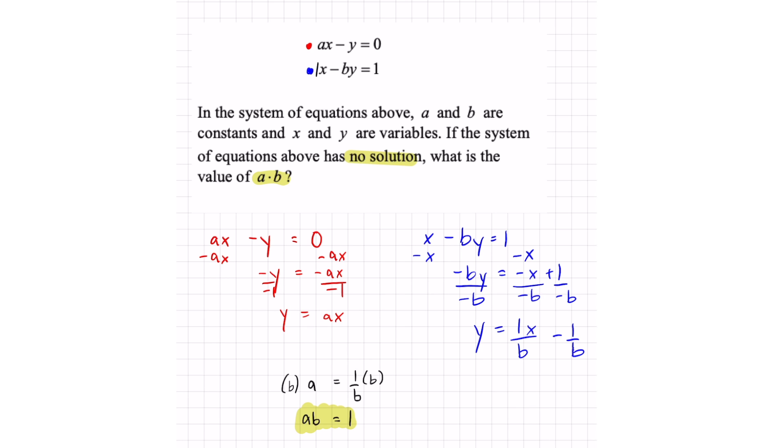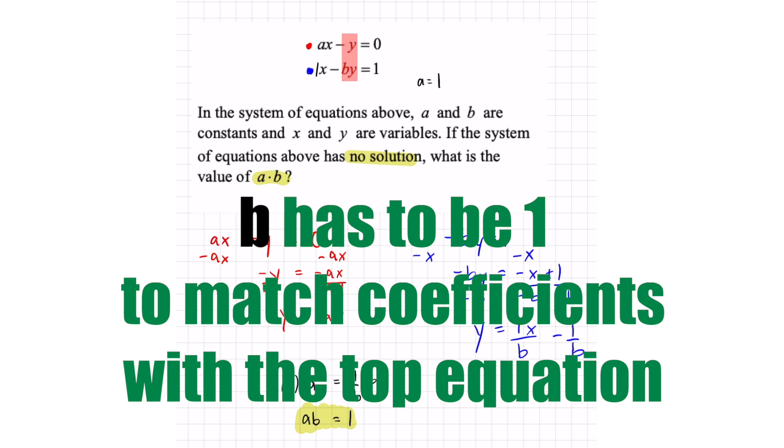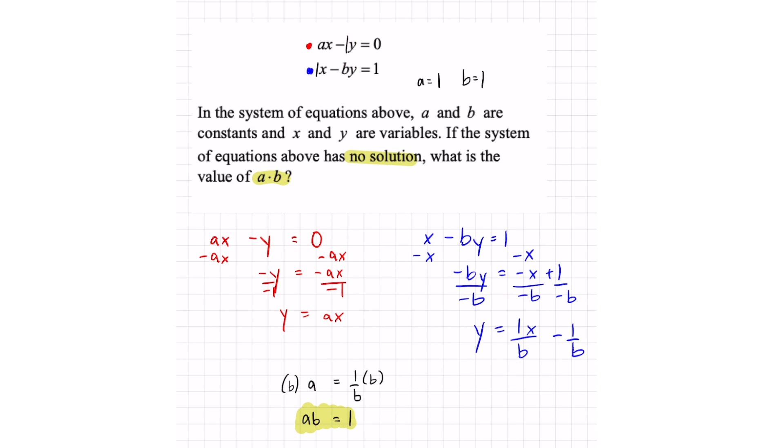The coefficient for x is 1, so I would say a equals 1. And the coefficient next to the y is 1, so b equals 1. And a times b equals 1. It works for this problem. That's how I would do it if I had no time.